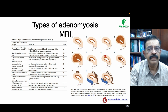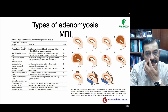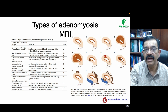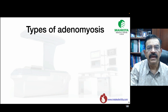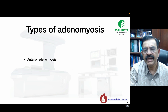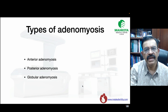The third MRI type is external adenomyosis, where adenomyosis starts outside and comes in — starting at the subserosal layer. If it is posterior, we call it a posterior external adenomyoma; if anterior, an anterior external adenomyoma. When we look at adenomyosis by location, it can be located anteriorly, posteriorly, or globularly — what we call globular adenomyosis.